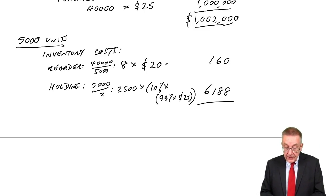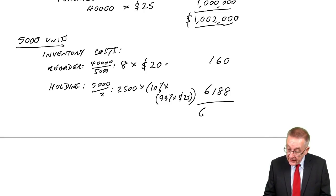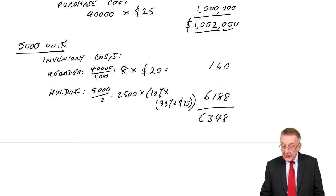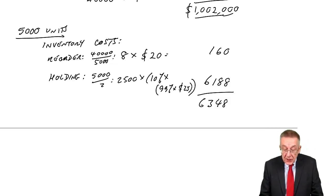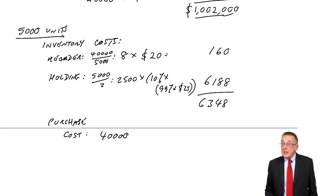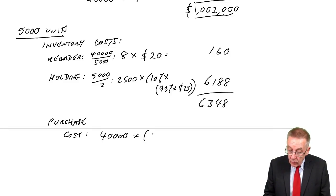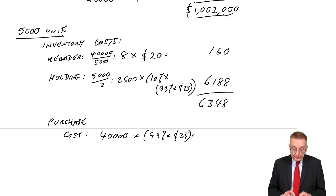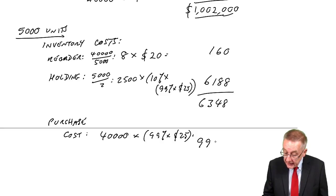So the total inventory costs will be 6,348, which of course is higher, a lot higher than before. It was only 2,000, now it's 6,348. But the total purchase cost will be lower. We still need 40,000 units over the year. But instead of paying 25 a unit, with a 1% discount, the cost per unit will be slightly lower. So what will the total be? I think my arithmetic's right. I get 990,000. Now, you could set out your workings differently, that doesn't matter.